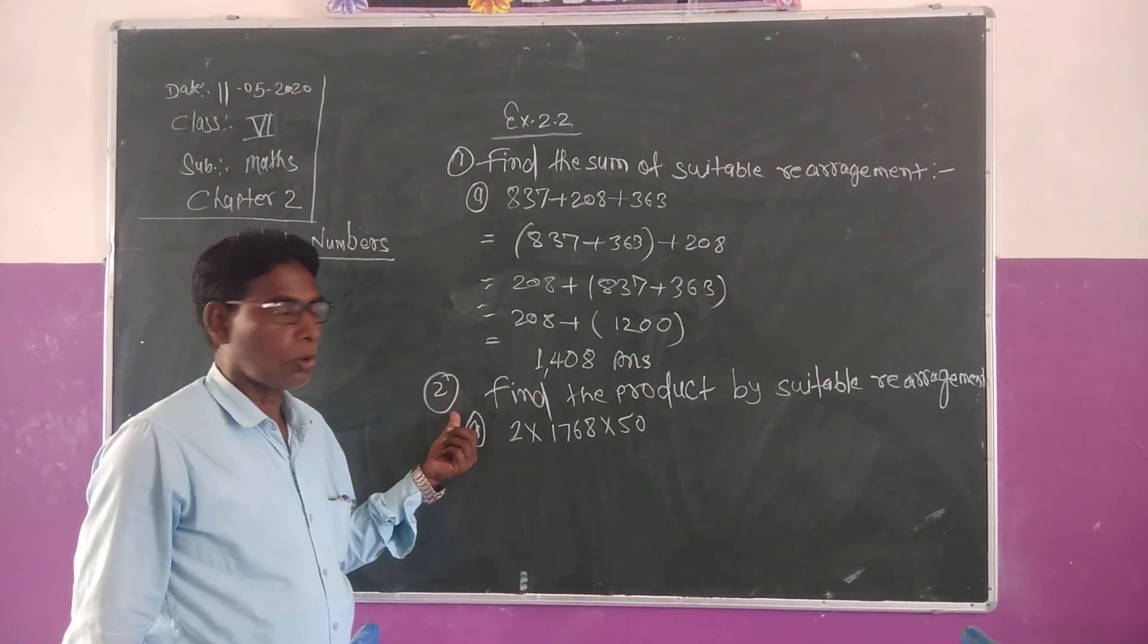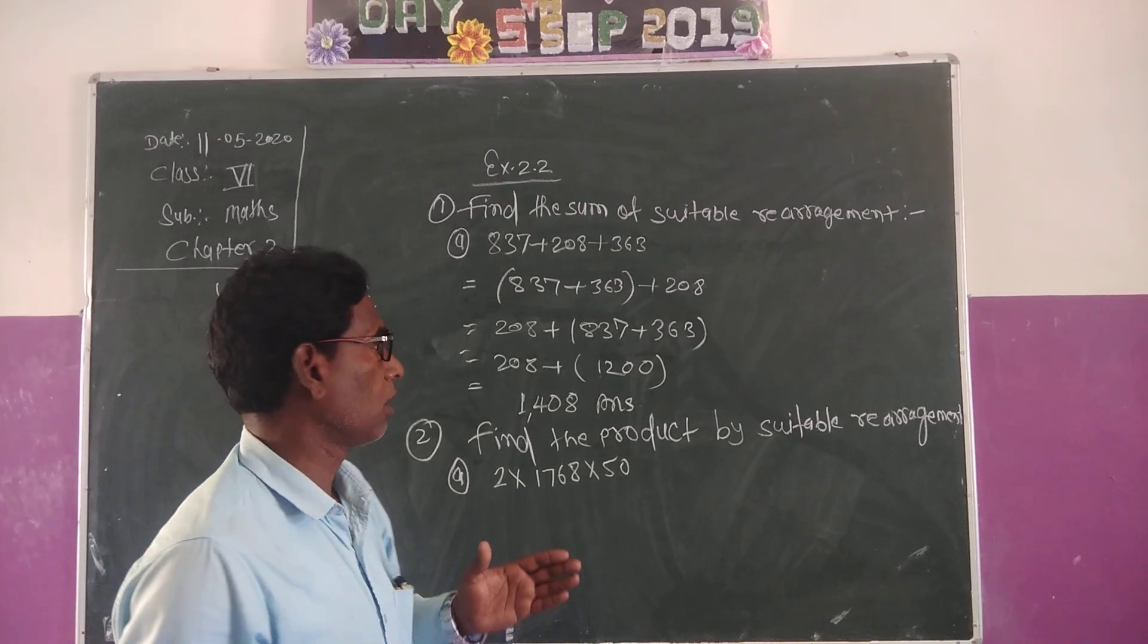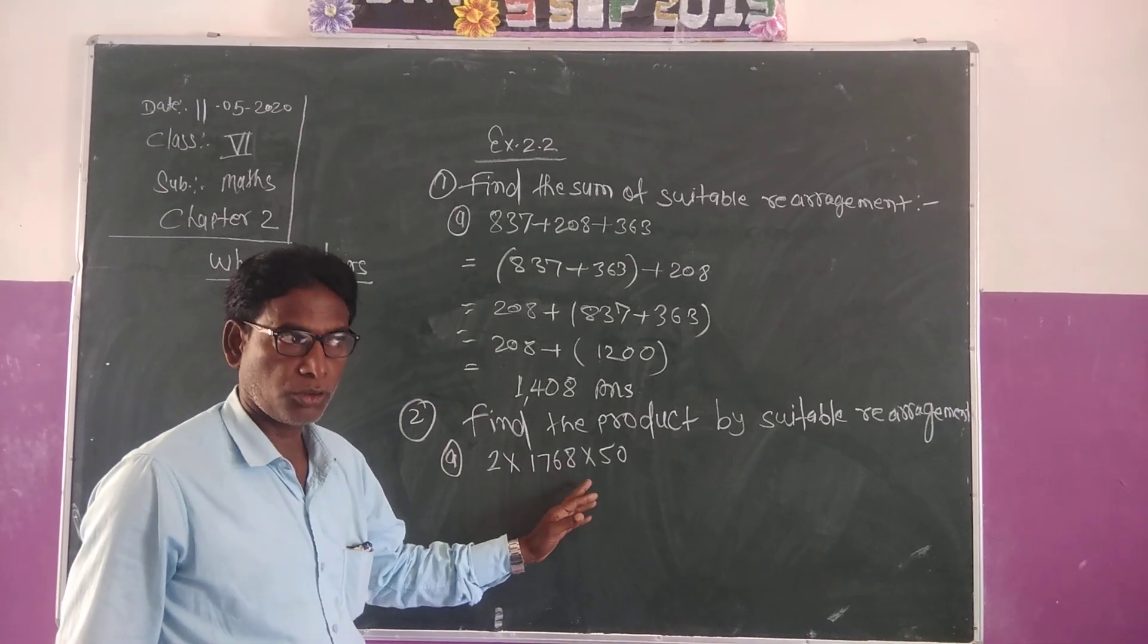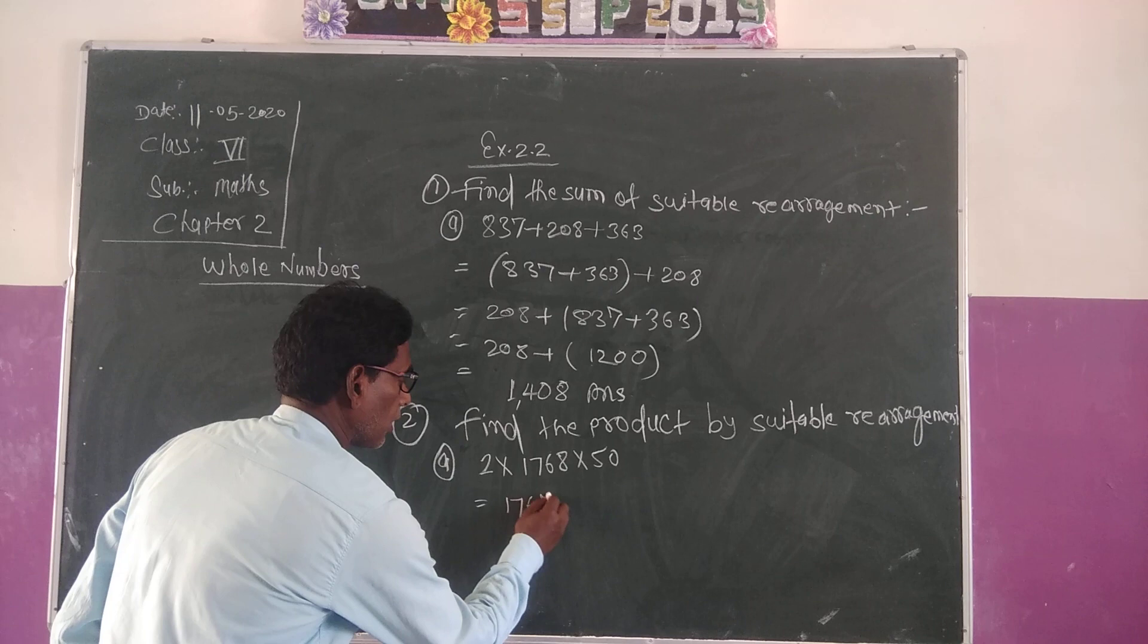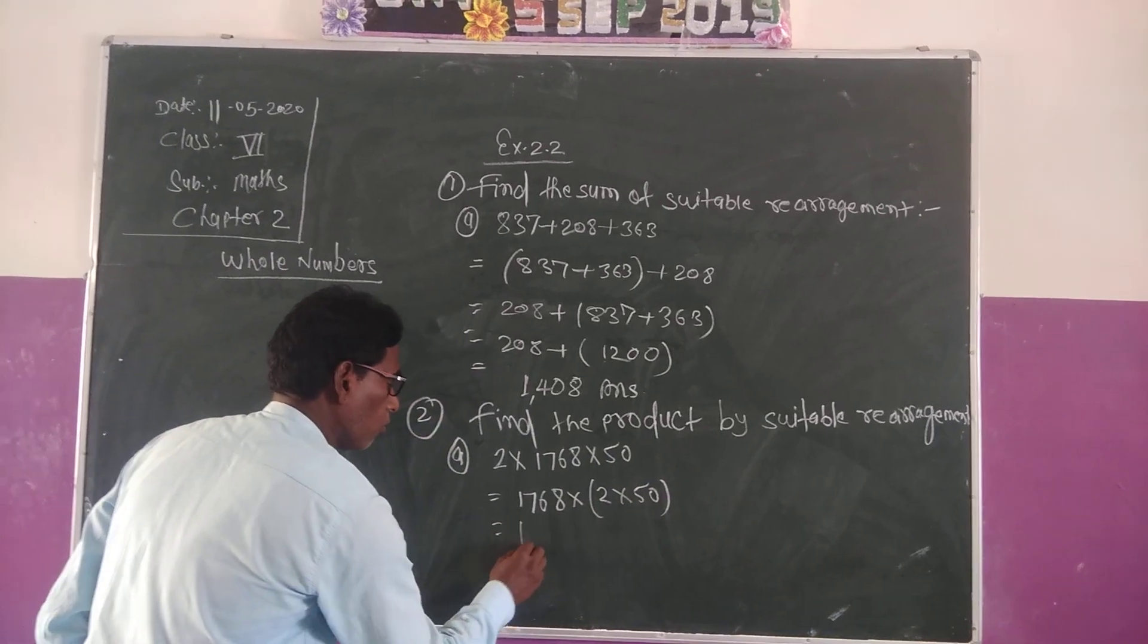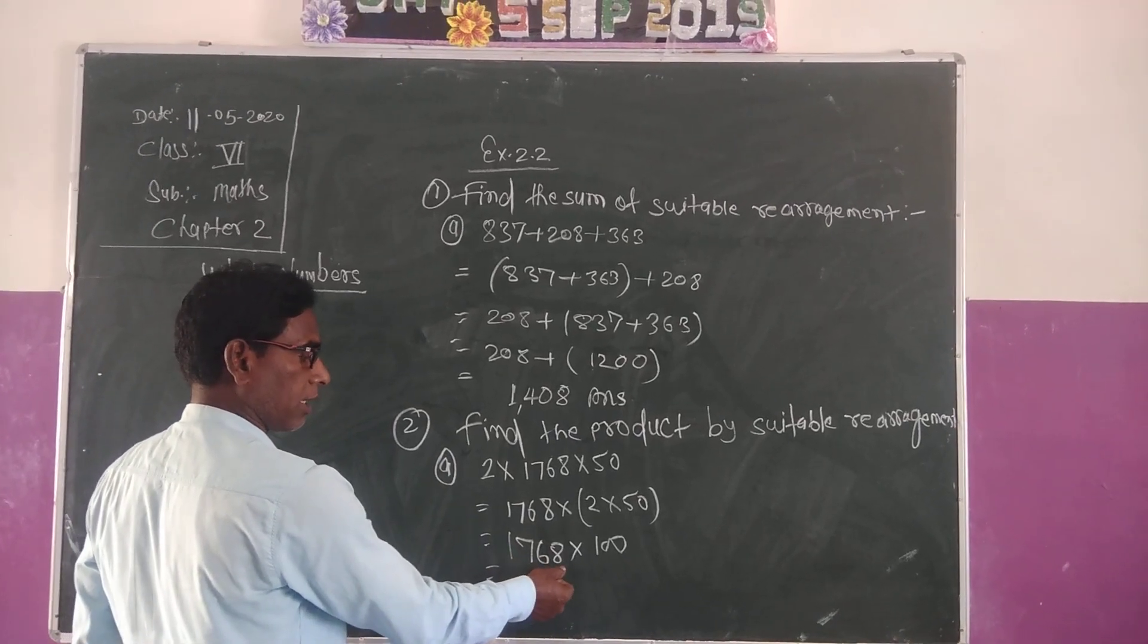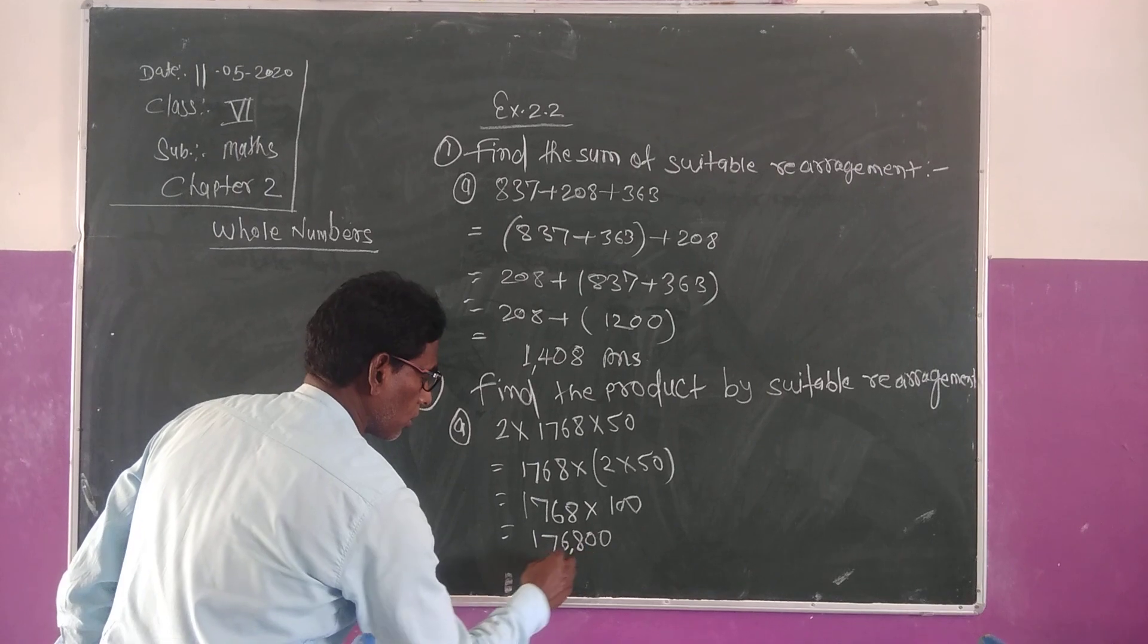Question 2: Find the product using suitable rearrangement. First question: 2 into 1768 into 50. First, you will arrange it. It equals 1768 into 2 into 50, which equals 1768 into 100. When you multiply 1768 with 100, result will be 176800. Answer.